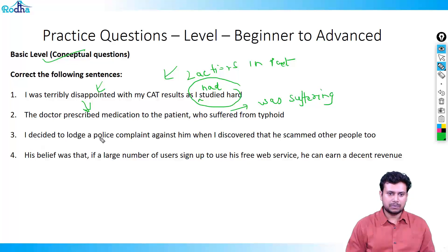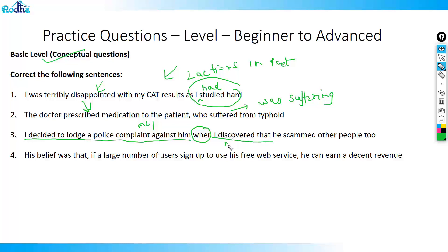Next: 'I decided to lodge a police complaint against him when I discovered that he scammed other people.' There are two main clauses here: 'I decided to lodge a police complaint' and 'I discovered that...', connected by 'when'. Decided and discovered are correctly parallel. However, within the second clause, 'discovered' and 'scammed' represent two actions in the past — scamming being the first — so it should be 'had scammed'. The correct answer is: I decided to lodge a police complaint against him when I discovered that he had scammed other people.